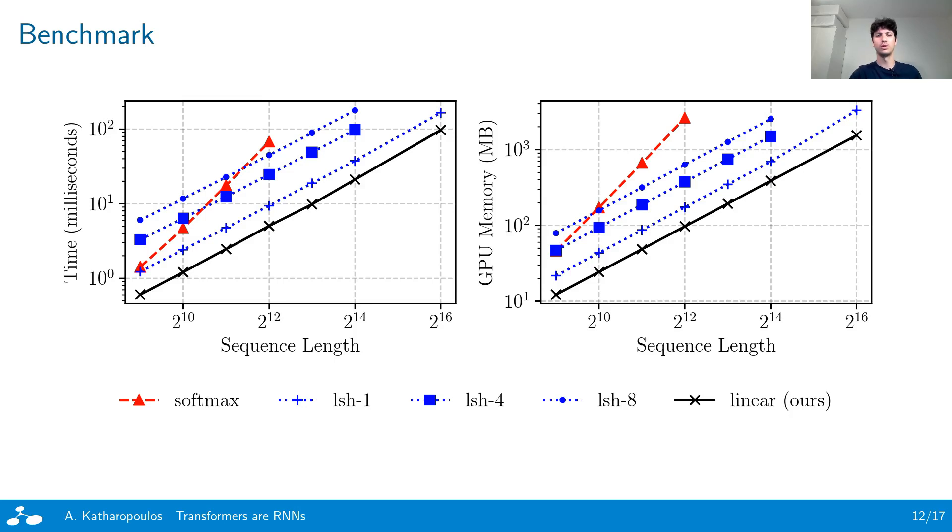Finally, we observe that our model is faster and requires less memory than Reformer, even when Reformer is used with just a single hashing round, and this is true for every sequence length.